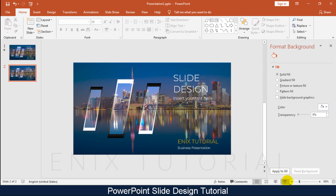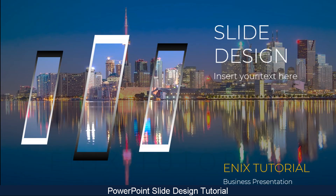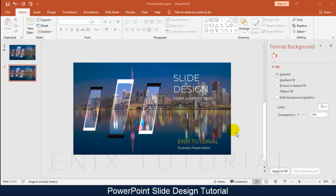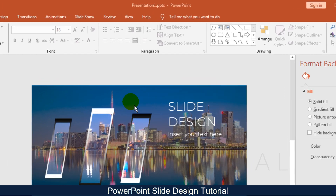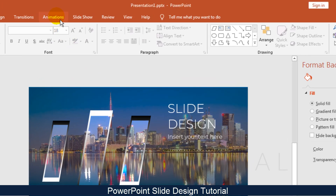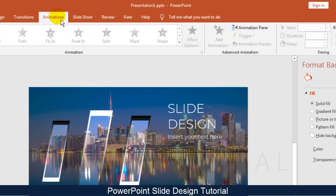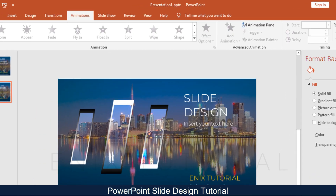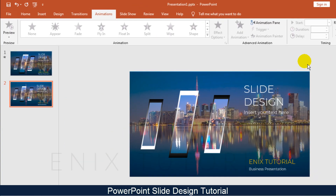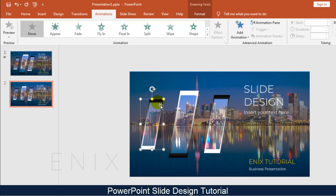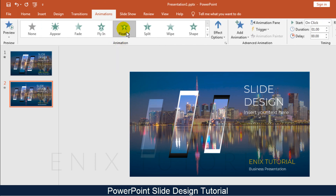And this is the result. Step 2: Go to the Animation menu. Select the parallelogram shape.